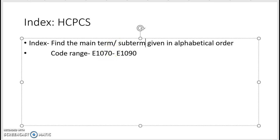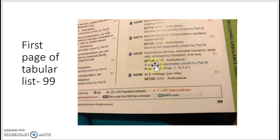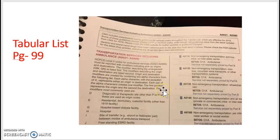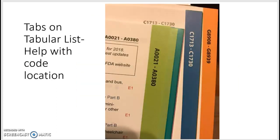Then we move on to our tabular list. We find the main term in the index, and then we go to the tabular list. The tabular list begins on page 99 — make sure you're following along in your book. It starts with your A codes. Page 99 is the first page of your tabular list, and the first codes are transportation services, which are ambulance codes.